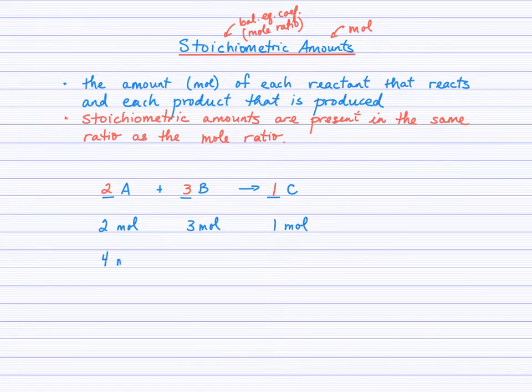What if you had four moles of A? Remember, the ratio has to be, so four to this number has to be in the ratio of two to three. So four to six would be the same ratio as two to three. Amount of C produced, two moles.